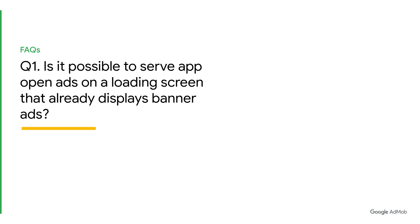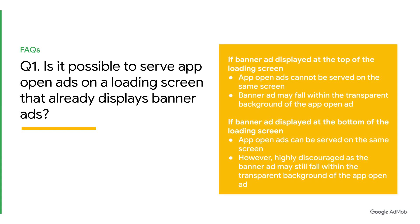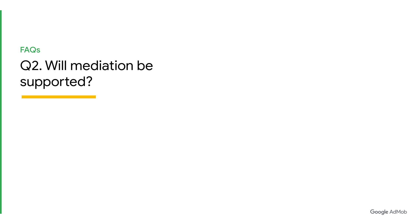Let's move on to some additional common questions developers have had to help you have a smooth implementation. Question 1: Is it possible to serve AppOpenAds on a loading screen that already displays banner ads? It depends. If the banner ad is displayed at the top of the loading screen, AppOpenAds cannot be served on the same screen, because the banner ad may fall within the transparent background of the AppOpenAd, which will then lead to a policy violation. If the banner ad is displayed at the bottom of the loading screen, AppOpenAds can be served on the same screen. However, this is highly discouraged as the banner ad may still fall within the transparent background of the AppOpenAd — it's not a good user experience and could trigger a policy violation.